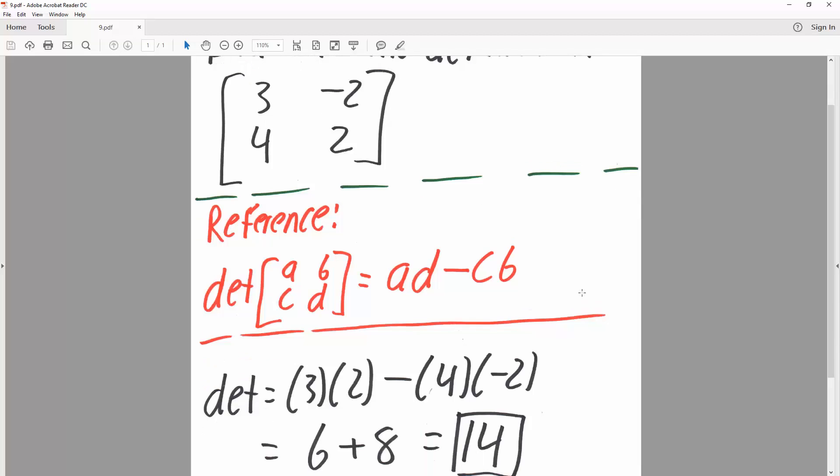And so for our problem, the determinant would be 3 times 2 minus 4 times negative 2.